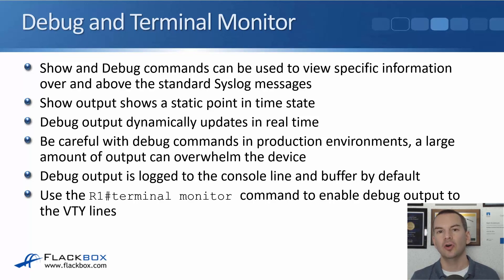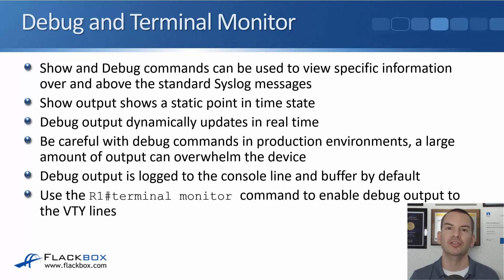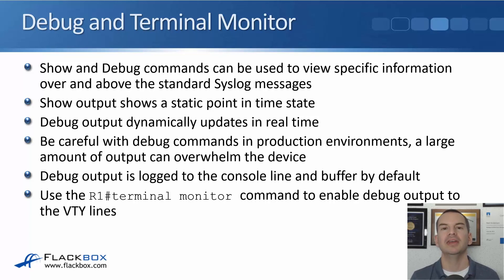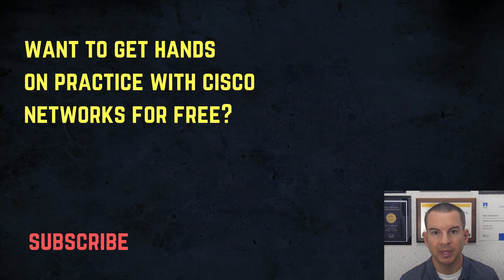If you're logged in over a Telnet or SSH session and you enter a debug command, even though events are being generated, you won't see them in the command line — this trips up administrators new to Cisco devices all the time. To actually see the debug output, you have to enter the 'terminal monitor' command, and that is done at the enable prompt.